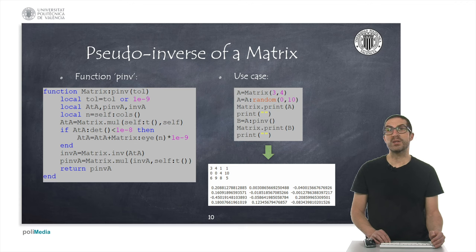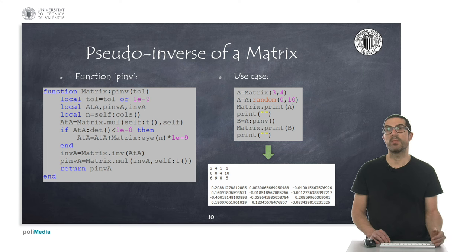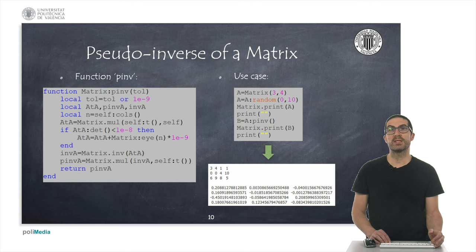The matrix library does not include computation of the pseudo-inverse of a matrix. However, this is convenient in many robotics applications, since it is quite useful to invert the Jacobian of a robot, and this Jacobian is not necessarily a square matrix — so the pseudo-inverse operator should be used. A script is included here to help compute this pseudo-inverse, along with a simple code example showing how to use it.